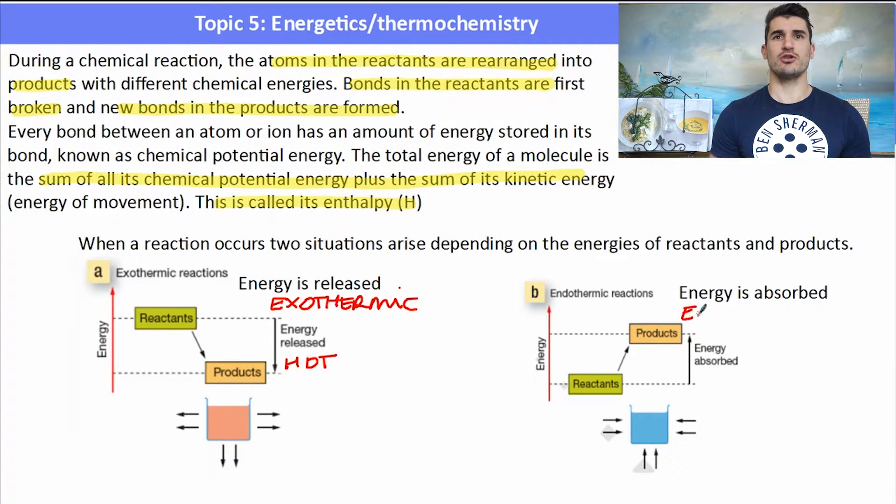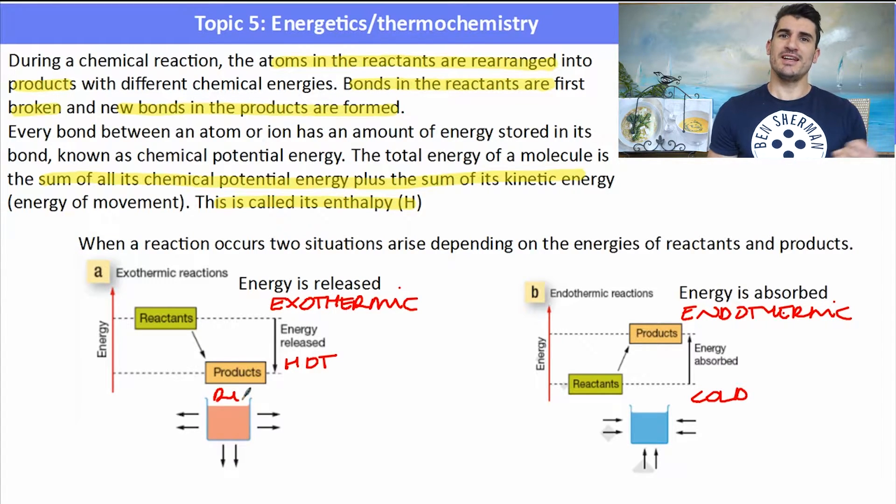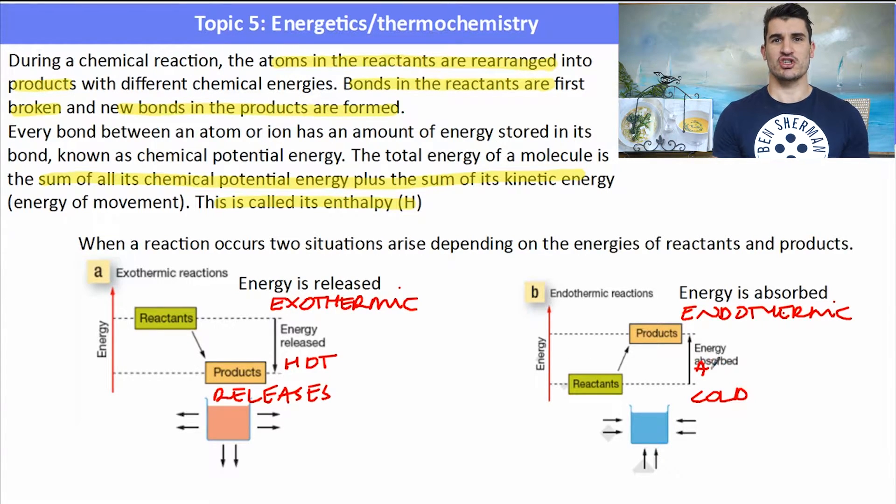An endothermic reaction, the reactants have less energy, less enthalpy than the products. So we have to add in a large amount of energy to get that reaction to go ahead. Remember that an exothermic reaction releases energy, it starts to get hot and an endothermic reaction absorbs energy. So it's cold and it's absorbing energy to form the products.